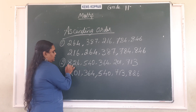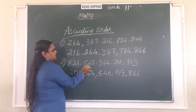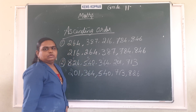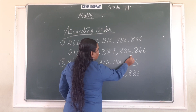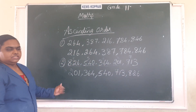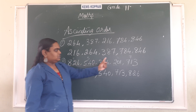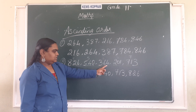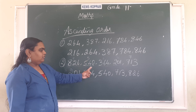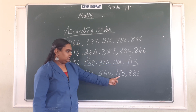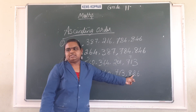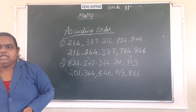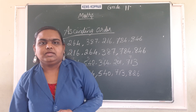For clarity, you can write the first digits above. The first digits are eight, five, three, two, seven. The smallest is two, so two hundred and one is first, then three hundred and sixty-four, then five hundred and forty, then seven hundred and thirty, then eight hundred and twenty-six. Is it easy to learn? Yes. So we have learnt the ascending order.